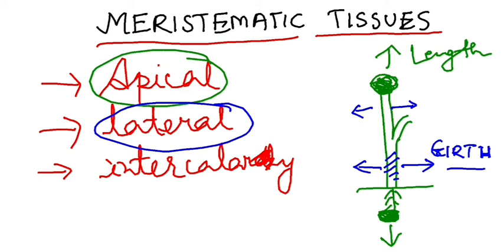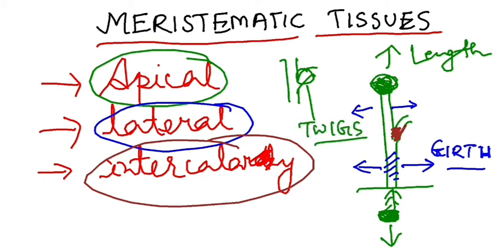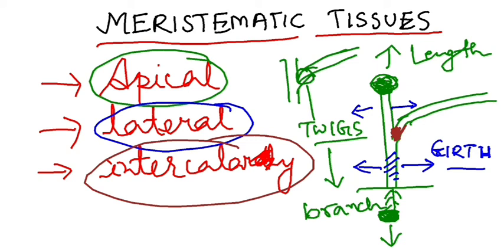The last is intercalary meristem. Intercalary meristem is present between nodes — it is responsible for twigs becoming branches. Because of intercalary meristem, a twig grows out as a branch. So to summarize: apical meristem is responsible for length, lateral meristem for girth, and intercalary meristem for twigs becoming branches.